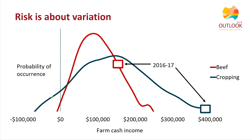Risk is one of those terms that's very widely used but often refers to different things. In the context of farming, risk refers to variation in farm profit and in particular to the occurrence of very low values of farm profit. Here we can see the risk profiles of beef and cropping farms in Australia. The peak of each curve occurs at the value of profit most likely to occur in each industry. Overall, beef farmers have typically earned lower but more stable incomes than cropping farms, who've earned higher average incomes but been exposed to greater potential losses.